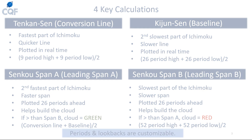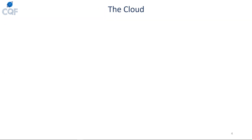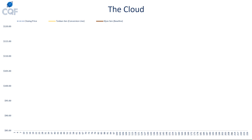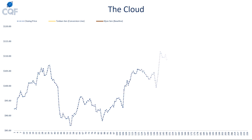Let's walk through a chart example. Imagine we have an asset with closing prices over 226 periods on the horizontal axis — these could be days, hours, or months. We have to keep in mind that we need data before period one in order to calculate the cloud. We actually need 78 data points before period one to calculate the cloud for period one.